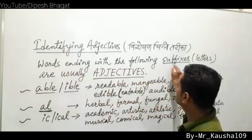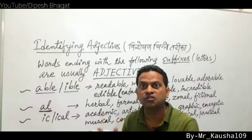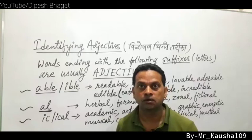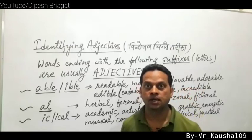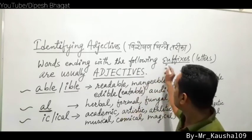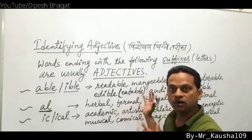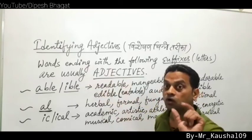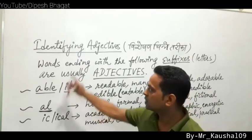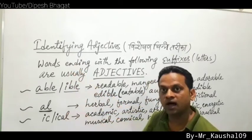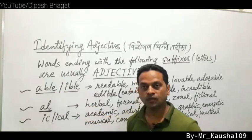Words ending with suffixes are usually adjectives. The suffix -ful (beautiful, helpful), -less (helpless), and -able/-ible are suffixes. Verb plus -able = adjective: readable, manageable, calculable, lovable, adorable, suitable, preferable, durable. Words ending in -ible: edible (eatable), audible, incredible.